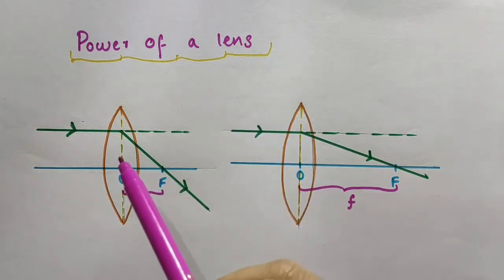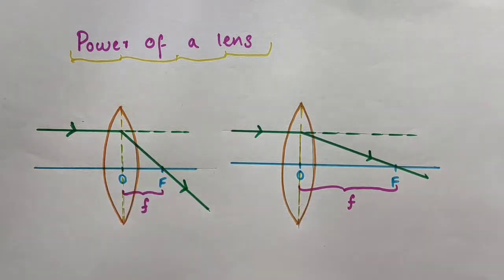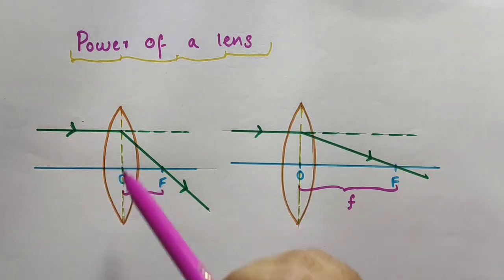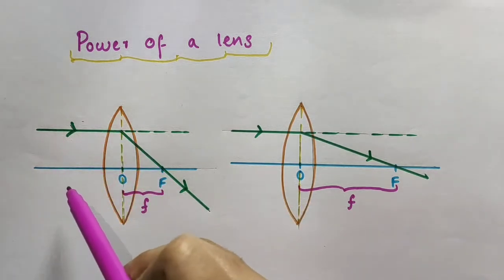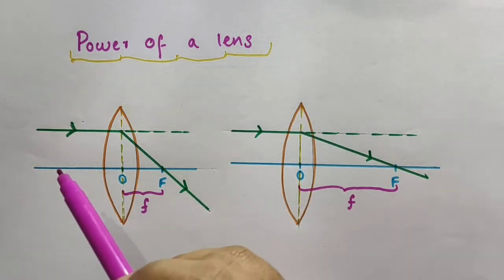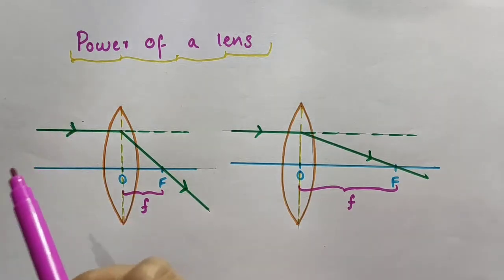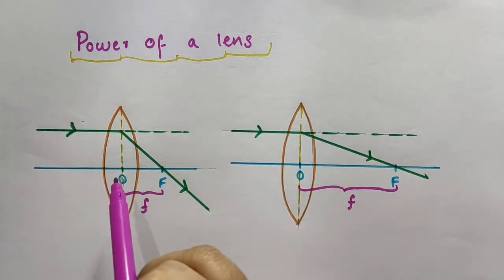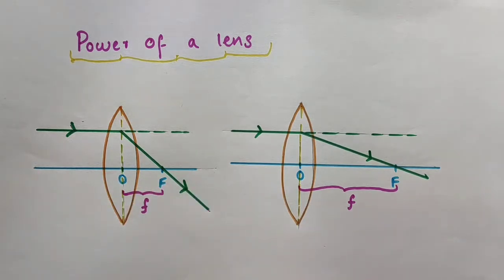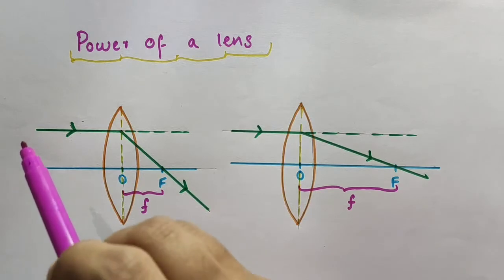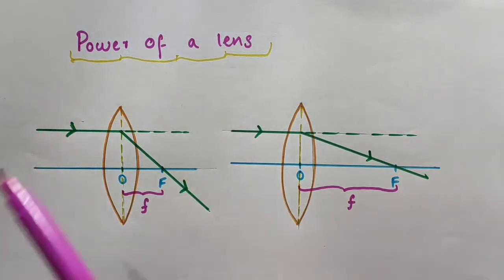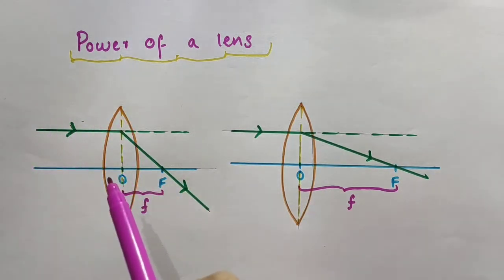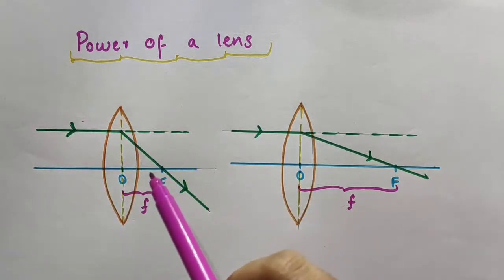Consider this convex lens — it is a converging lens. Let F be the principal focus of this convex lens on this side of the lens. A lens has two principal foci, one on each side, but we consider the focus on the right side because we usually keep our object to the left of the optical center O, which lies on the principal axis.